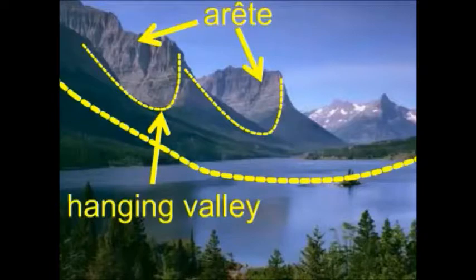When one of these tributary glaciers dumps into a bigger U-shaped valley, we can see a very steep slope — that's a hanging valley. That's where a previous glacier fed into a bigger one, but when everything melts, it produces essentially a cliff. In these alpine areas, this is where you're going to find waterfalls, as water comes crashing down from a hanging valley.